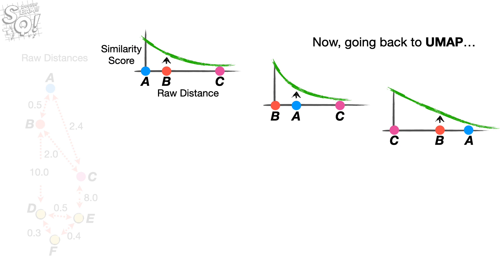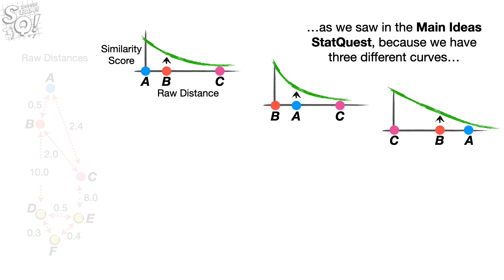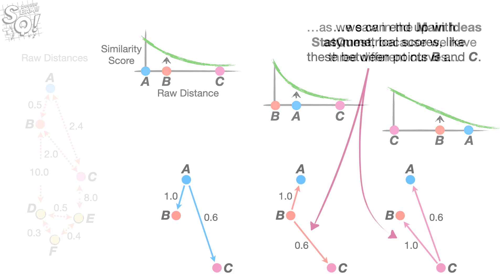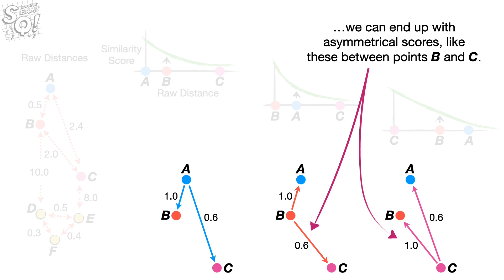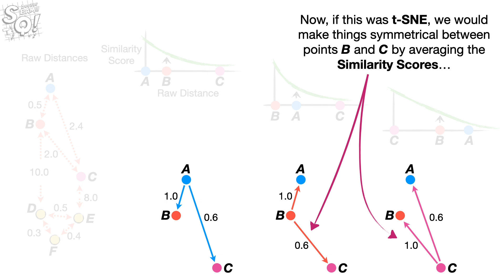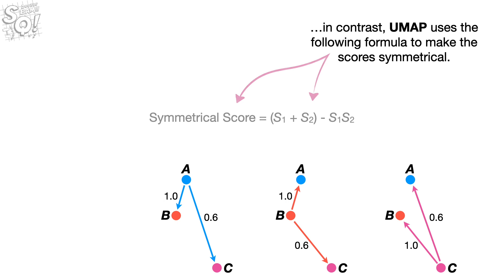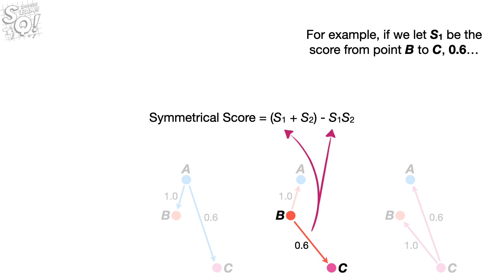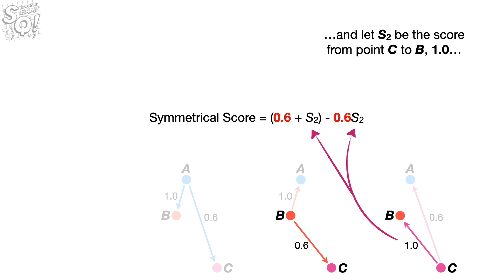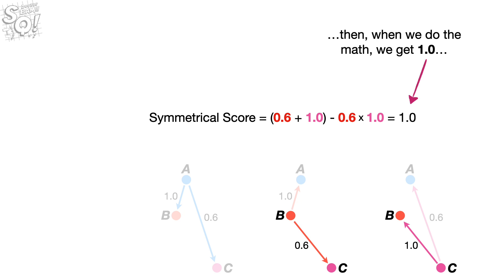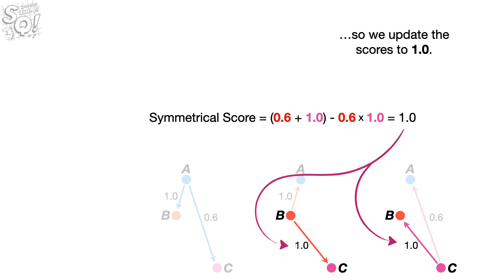Going back to UMAP, as we saw in the main ideas StatQuest, because we have three different curves, we can end up with asymmetrical scores between points B and C. Now, if this was T-SNE, we would make things symmetrical between points B and C by averaging the similarity scores. In contrast, UMAP uses the following formula to make the scores symmetrical. For example, if we let S1 be the score from point B to C, 0.6, and let S2 be the score from point C to B, 1.0, then when we do the math, we get 1.0. So we update the scores to 1.0.